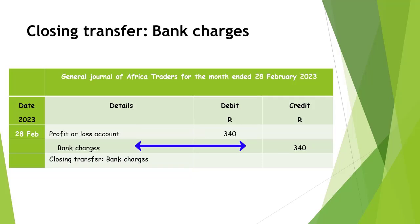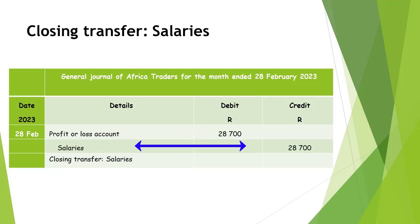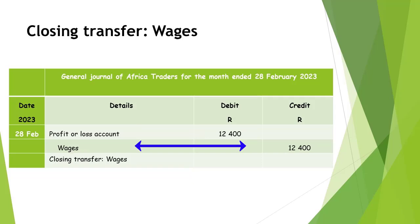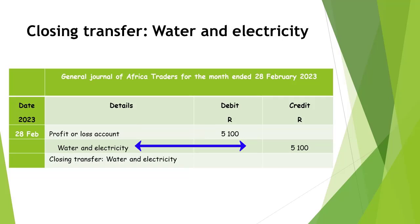Bank charges is credited with R340 and the profit or loss account is debited with R340. Salaries is credited with R28,700 and the profit or loss account is debited with R28,700. Wages is credited with R12,400 and the profit or loss account is debited with R12,400. Water and electricity is credited with R5,100 and the profit or loss account is debited with R5,100.